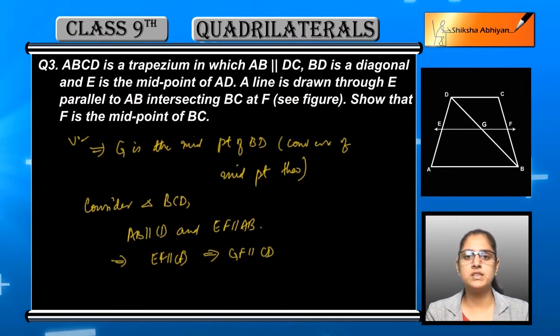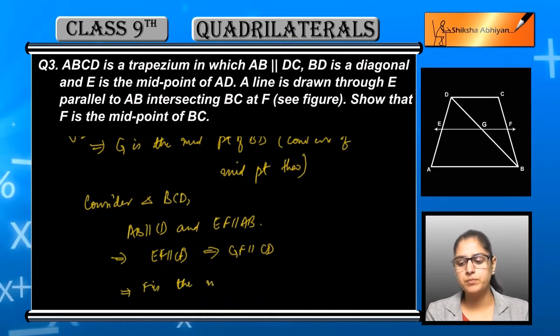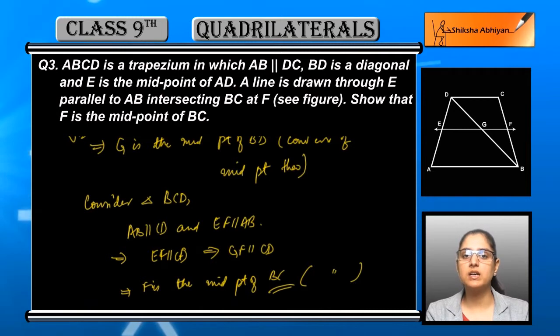In this case, G we have already proved is the midpoint. Now AB and CD are both parallel, and EF and AB are both parallel. Because of these being parallel and G being the midpoint, we can say that EF is parallel to CF, and ultimately the second combination - that is, GF is parallel to CD. Because of these being parallel, F becomes the midpoint of